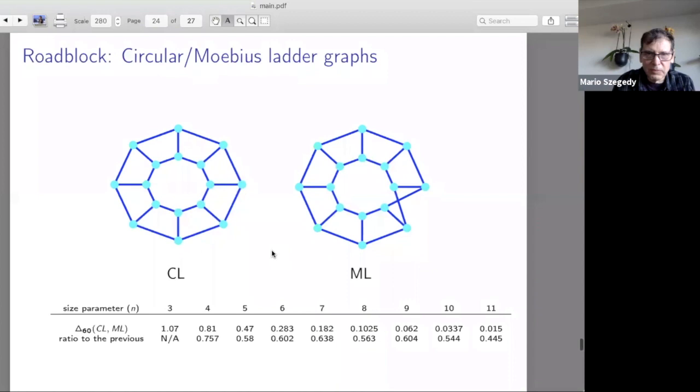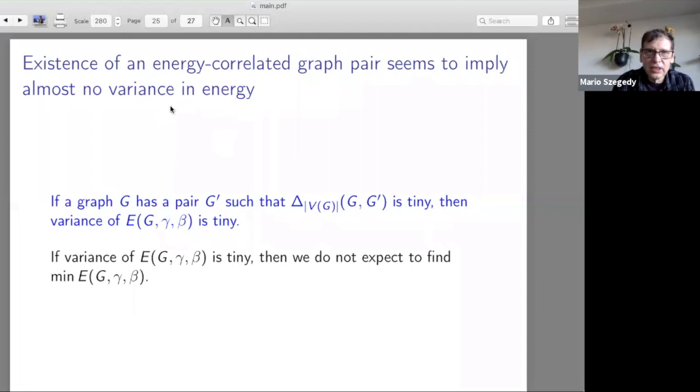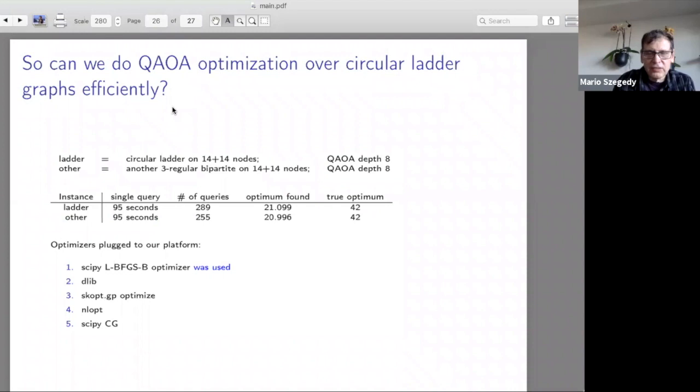But then that actually in conjunction with another amazing observation, which is that if a graph has a bad pair, like the circular ladder has the Möbius ladder where this energy difference is very tiny, then that can only happen according to my experiment. I cannot prove it, but all evidence suggests that the energy landscape of the graph itself ought to be super flat, like there is a very tiny variation on the energy. Basically if it's exponentially small, then the energy landscape has only exponentially small variance.